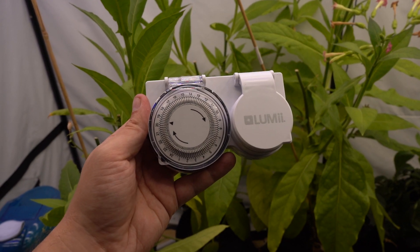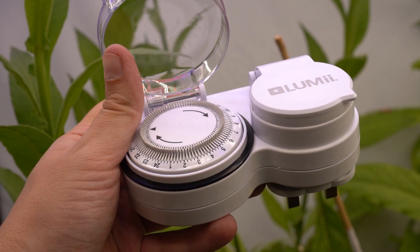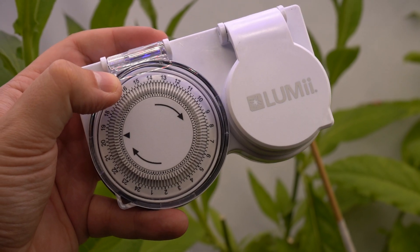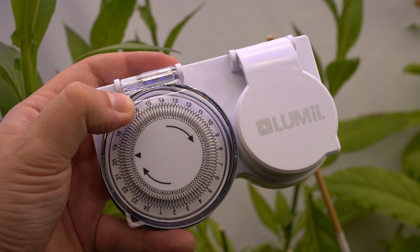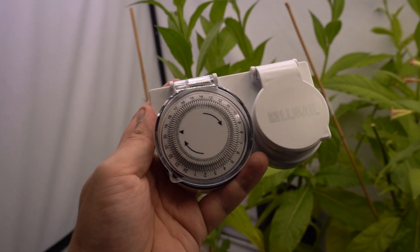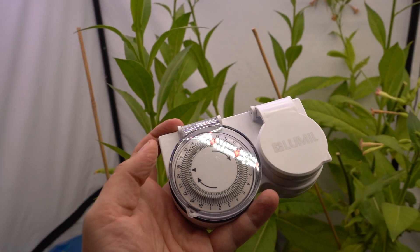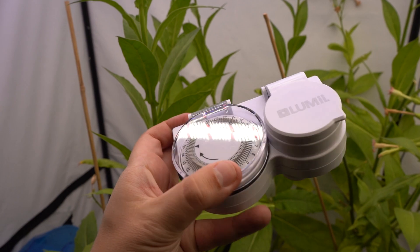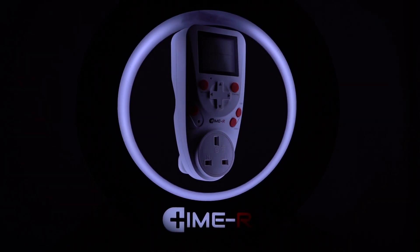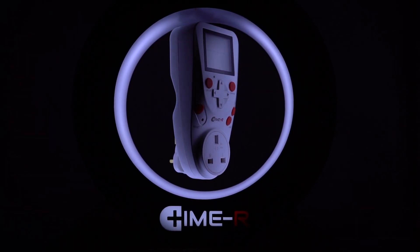This is done by the simple introduction of a lighting timer. Most growers will be familiar with these simple bits of kit, and we definitely recommend operating an additional timer for your UV light. Many mechanical options like this one go as low as 15 minute increments, but you can get digital ones that can be set up to work on intervals of just a few seconds.